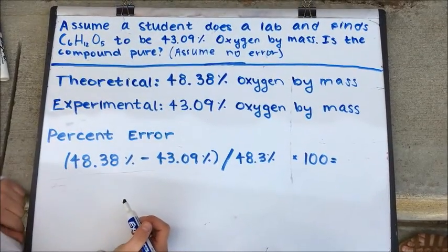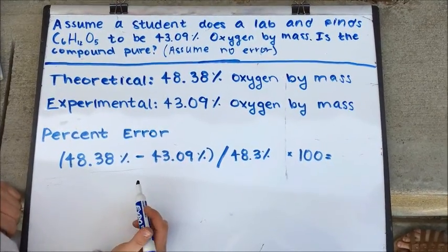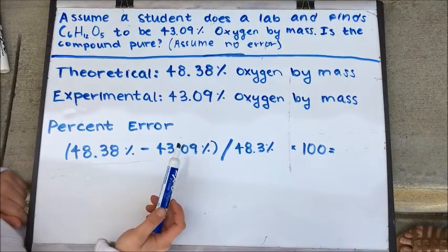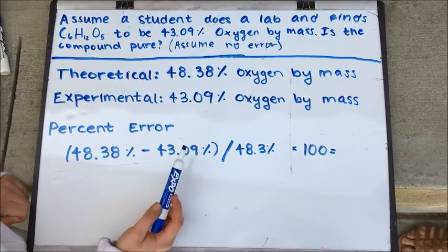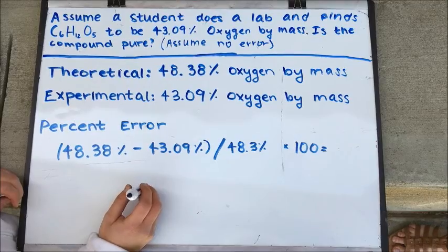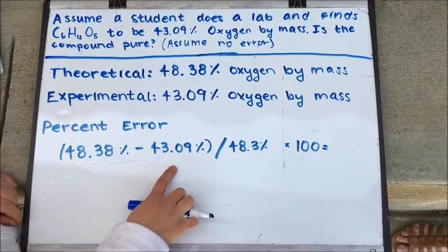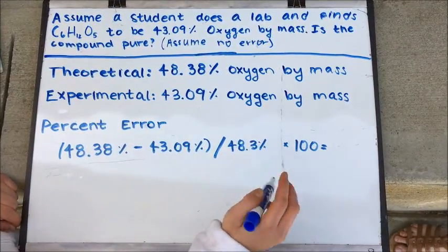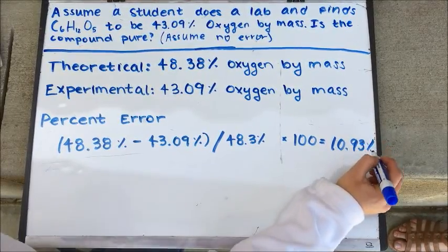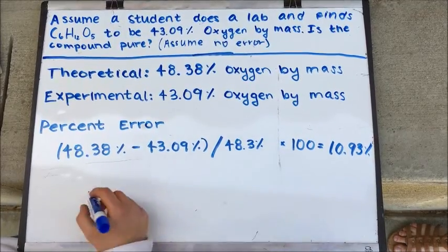Assume a student does a lab and finds C6H12O5 to be 43.09% oxygen by mass. Is the compound pure? Assume no error in the lab. From our previous question, we know that the theoretical value of percent oxygen by mass is 48.38%, and the student found 43.09%. Calculating the percent error — theoretical minus experimental divided by theoretical, times 100 — gives 10.93% error. Because of the difference in theoretical and experimental percent, we can see that this compound is not pure.